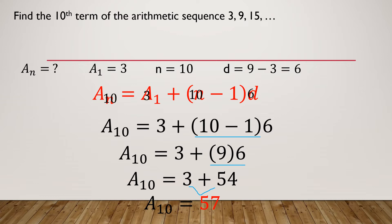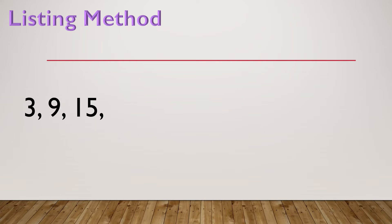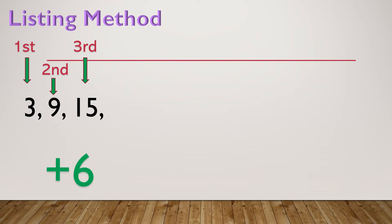Since arithmetic sequence is something that happens in real life, we can also solve problems under arithmetic sequence without using this formula. We may use the listing method. Since the sequence is 3, 9, 15 — representing the first, second, and third terms — we can continue the sequence until we obtain the 10th term. First, we identify the pattern: by adding 6 each time. We use this pattern to further continue our sequence.